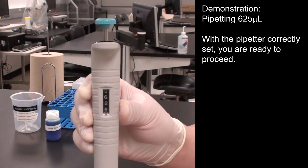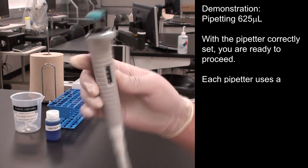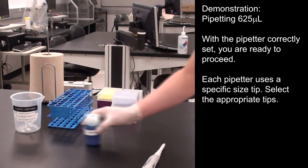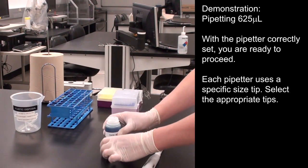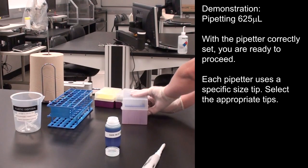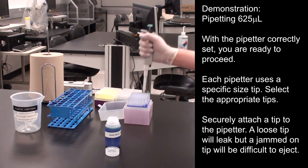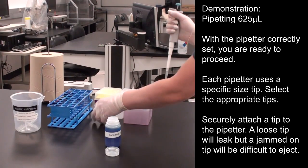With the pipetter correctly set, you are ready to proceed. Each pipetter uses a specific tip size. Select the appropriate tips. Securely attach a tip to the pipetter. A loose tip will leak, but if you jam on a tip, it will be difficult to eject.